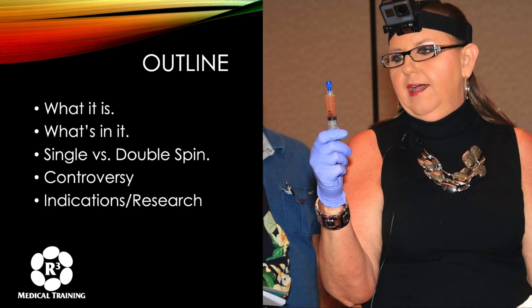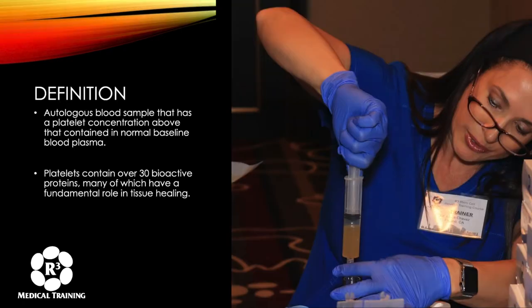Before it got popular in musculoskeletal medicine — which is predominantly what we're talking about — PRP has been used heavily for wound healing, dentistry, and cardiac surgery. But we're going to focus on the musculoskeletal. The definition of PRP is that it is an autologous blood sample that has a platelet concentration above that contained in normal baseline blood plasma. Platelets contain over 30 bioactive proteins, many of which have a fundamental role in tissue healing. Everybody thinks about them as being great for clotting, and they are, but the fact is they do so much more.